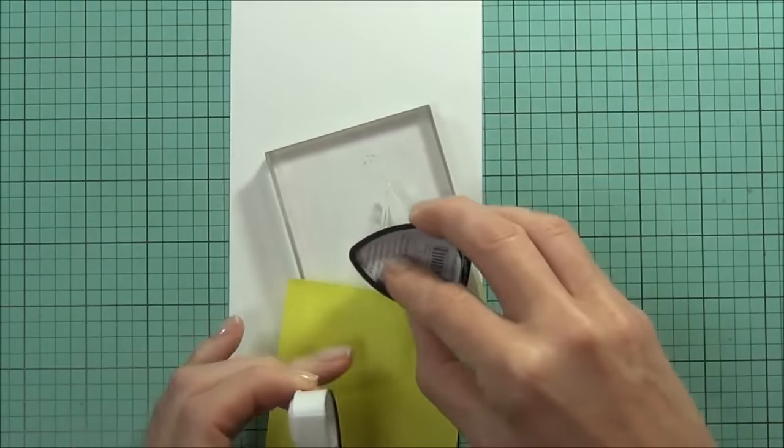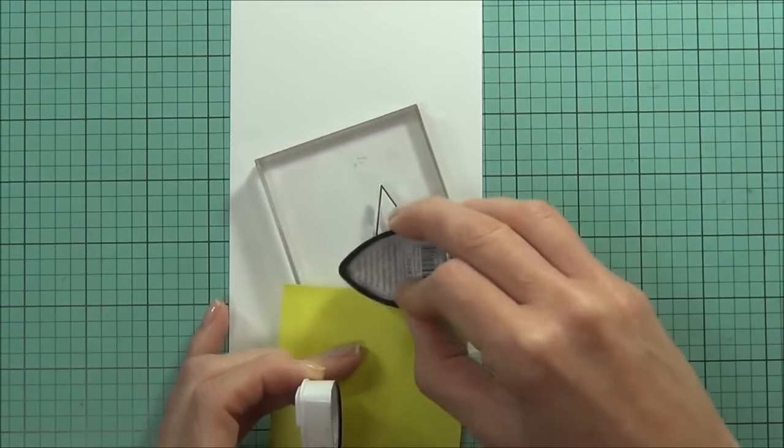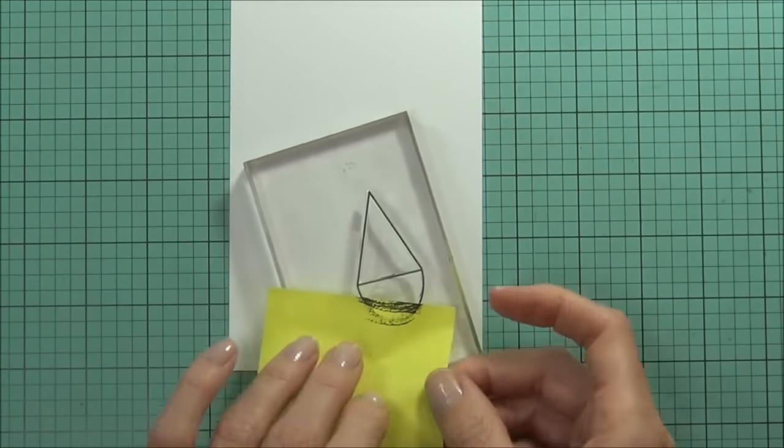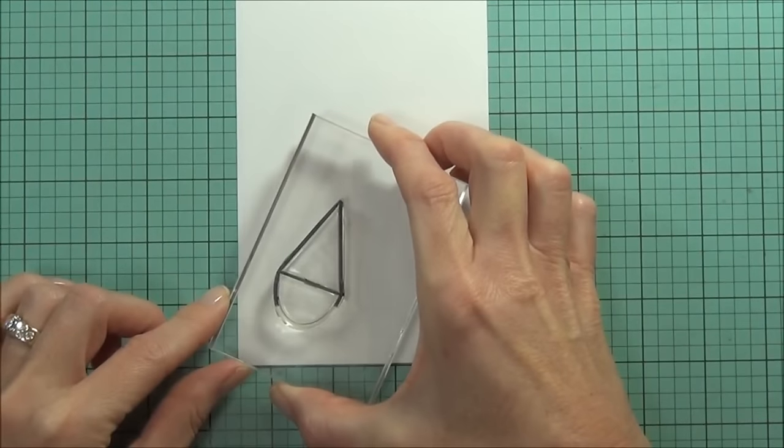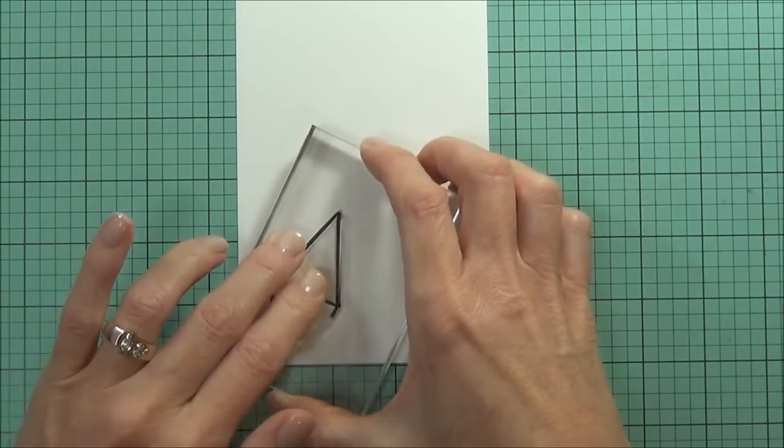Then I can add my ink. This is Memento Tuxedo Black. I just want to make sure that I remove my mask before I stamp. Once I've stamped my image...